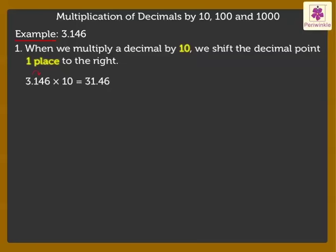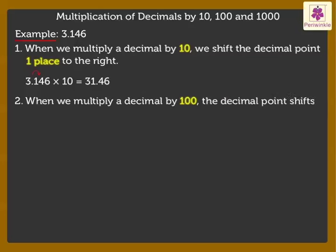In the same way, when we multiply a decimal by hundred, the decimal point shifts two places to the right. Thus, 3.146 into 100 is equal to 314.6.